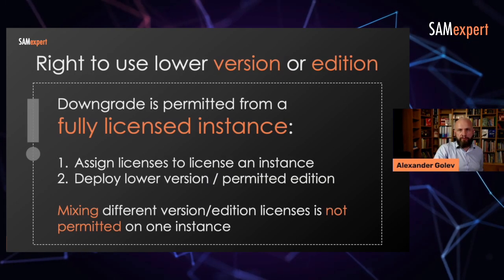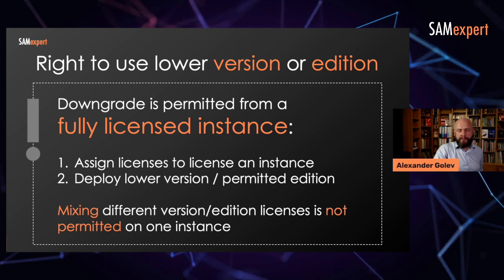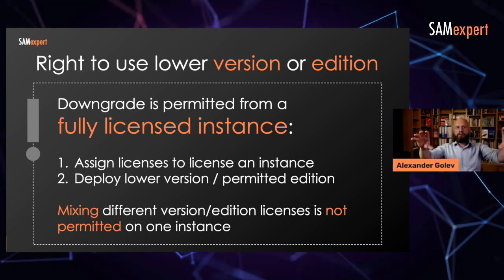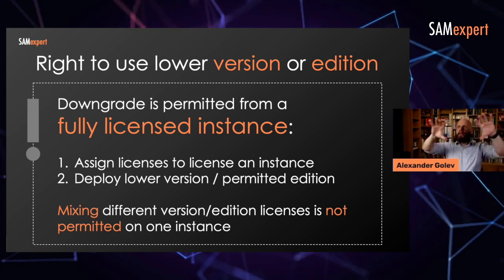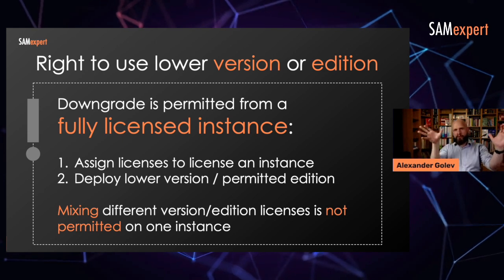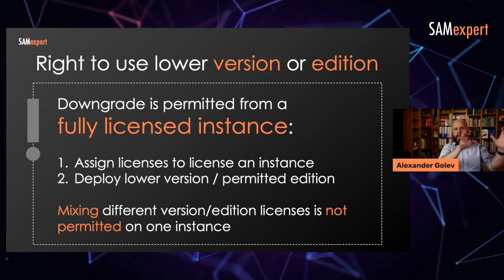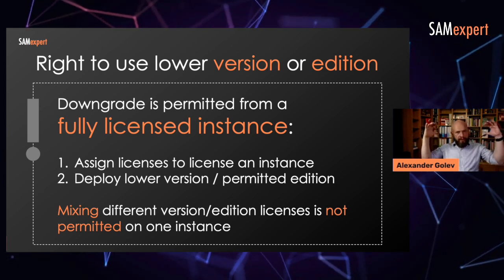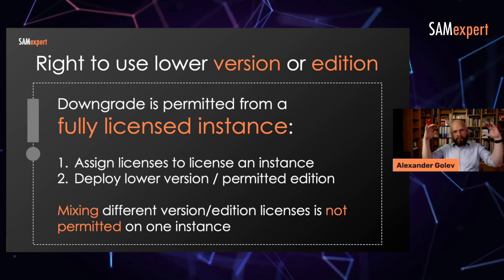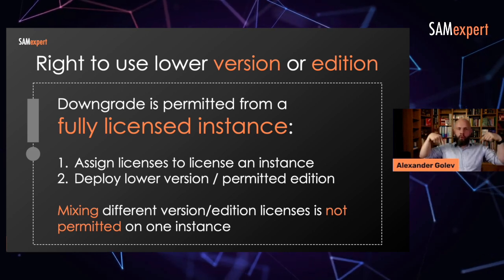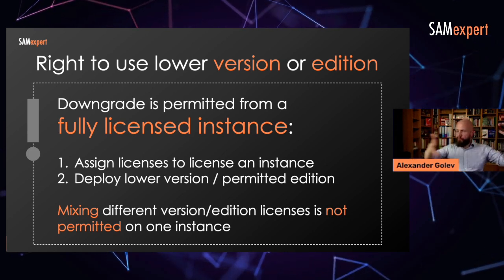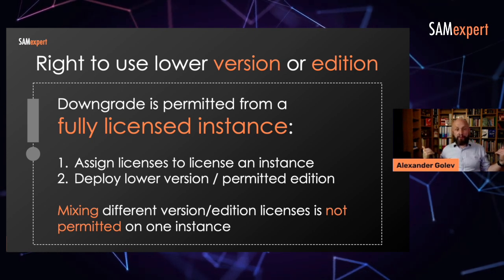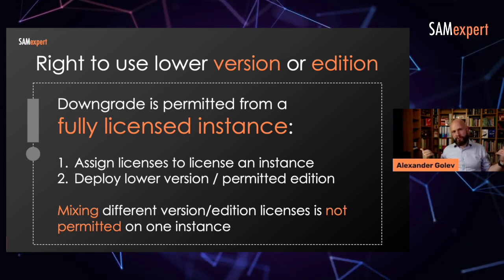Downgrade is permitted only from a fully licensed instance. It's not a license that is downgraded. You first have to hypothetically license an instance of software with all the necessary core licenses, processor licenses, and whatnot. You have to have enough licenses for that instance, and then you may install or move a VM to that place that has a lower edition or version permitted.